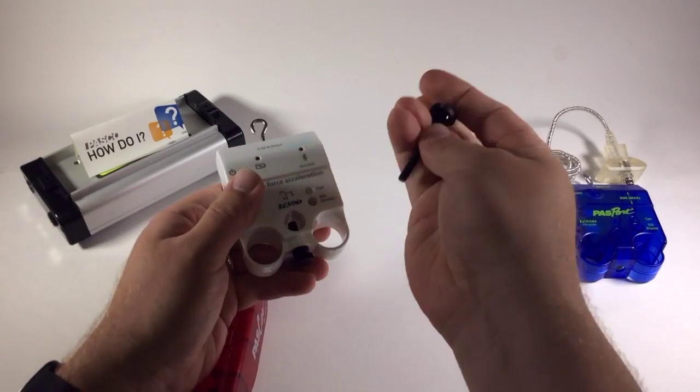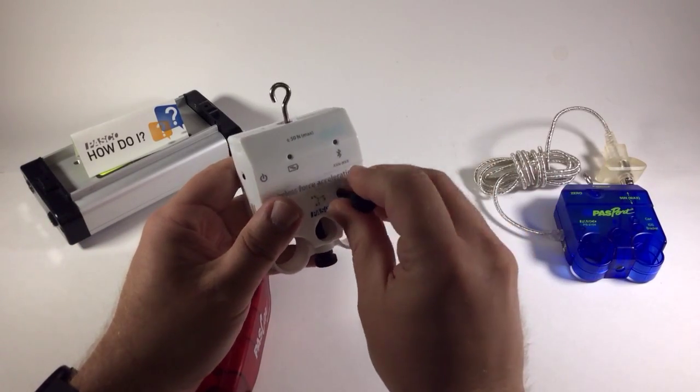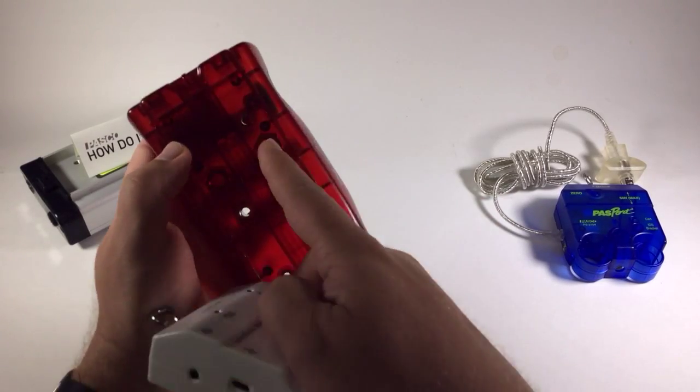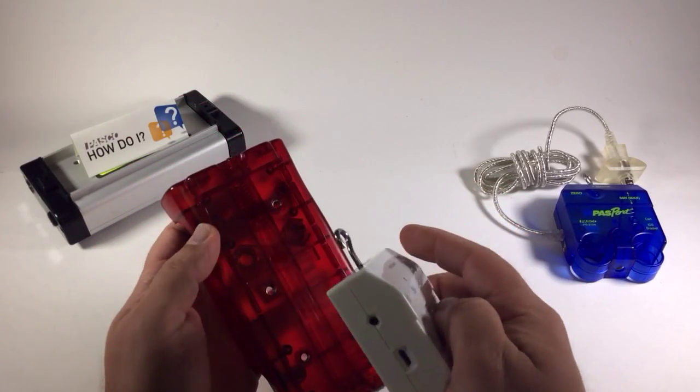Each sensor comes with a long thumb screw that can be inserted into that hole labeled cart and threaded through to the hole in the cart itself.